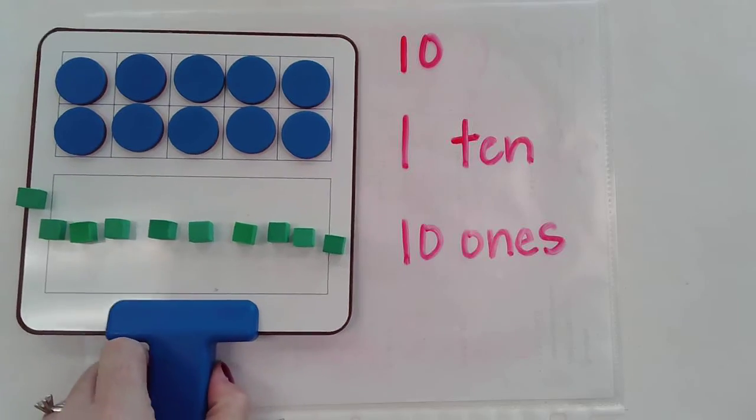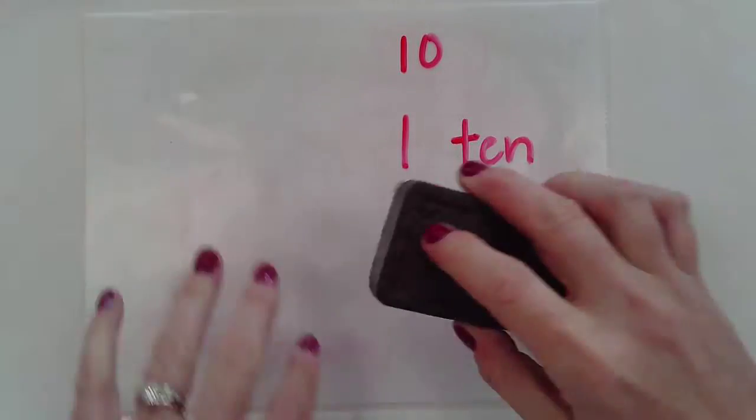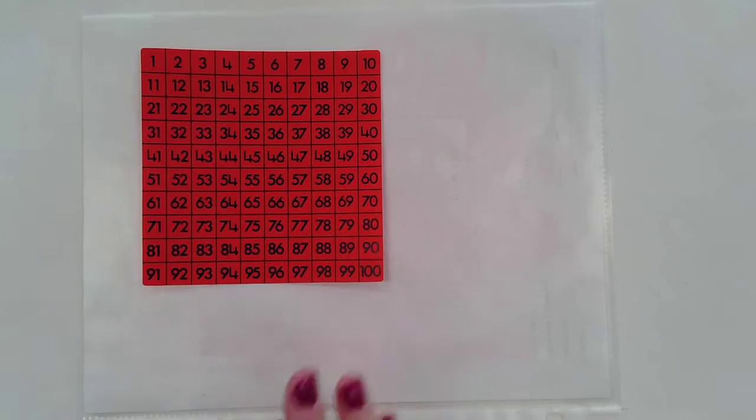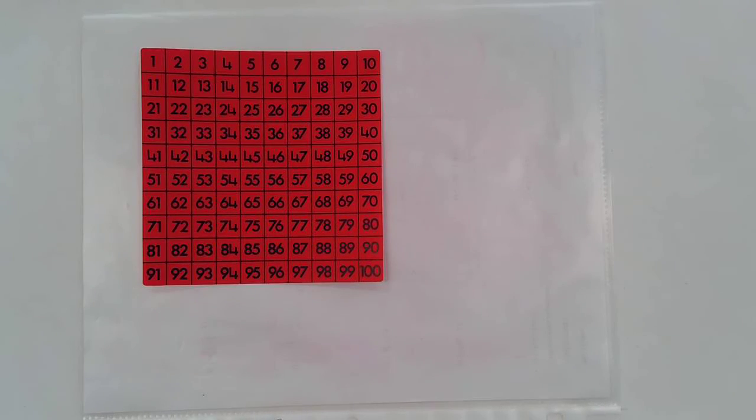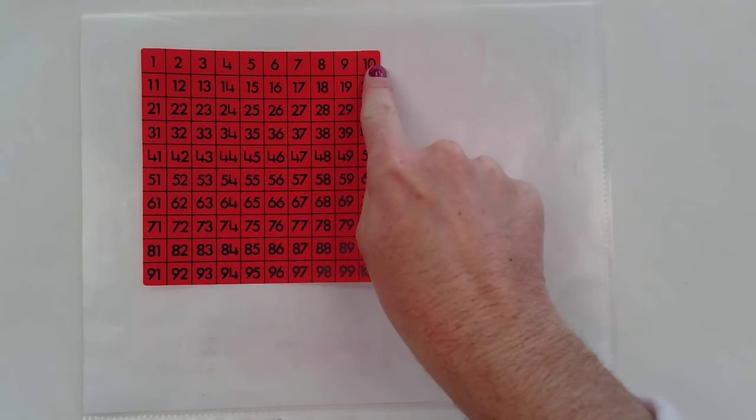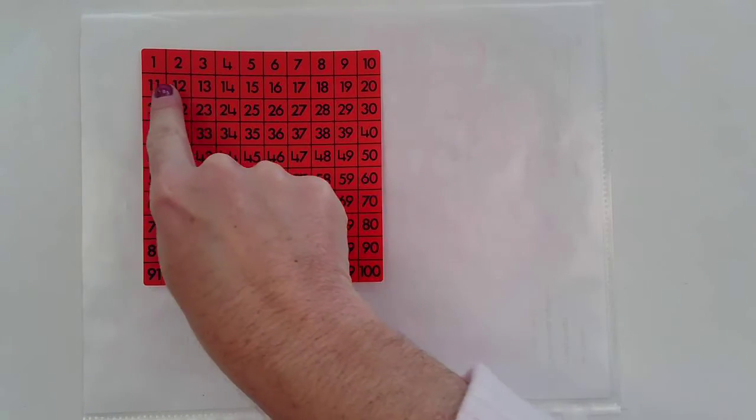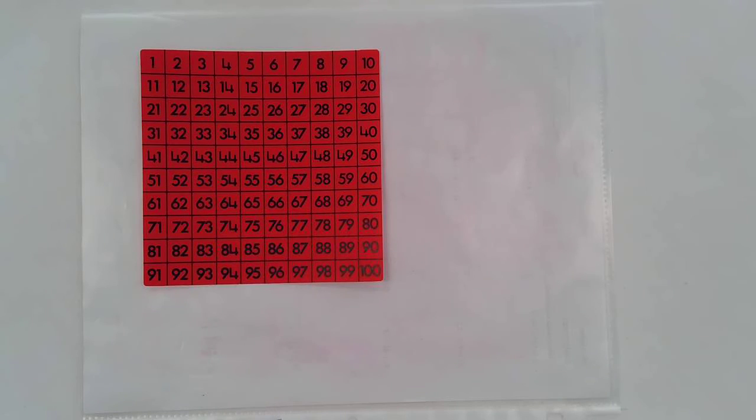All right, so let's take a look at a hundreds chart here. You can see, and you probably have looked at a hundreds chart before, we have ten numbers in the first row and we have ten numbers in the second row and so forth. So each row has ten numbers. It's made up of groups of ten.